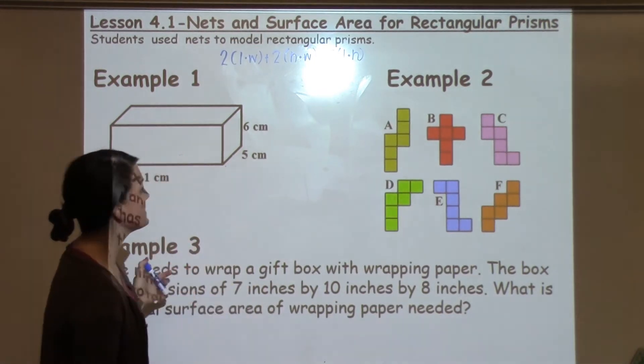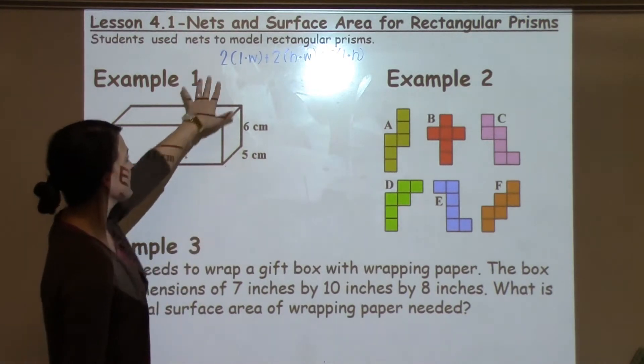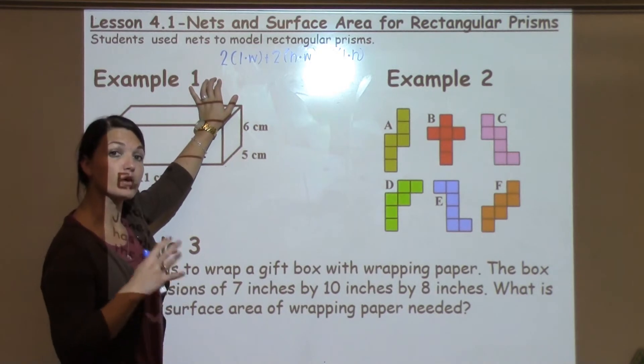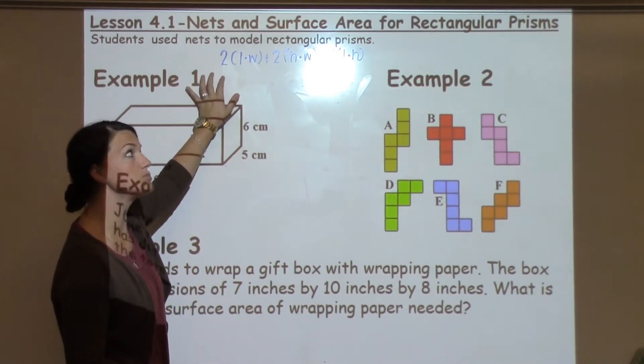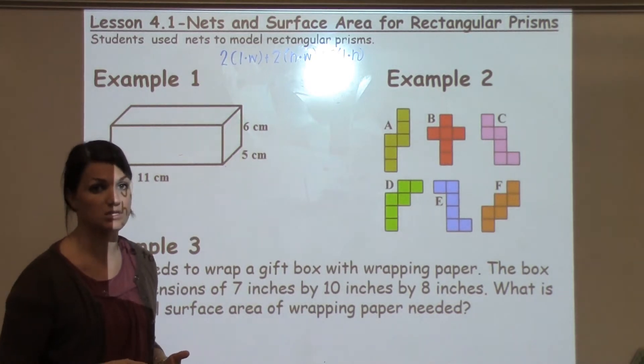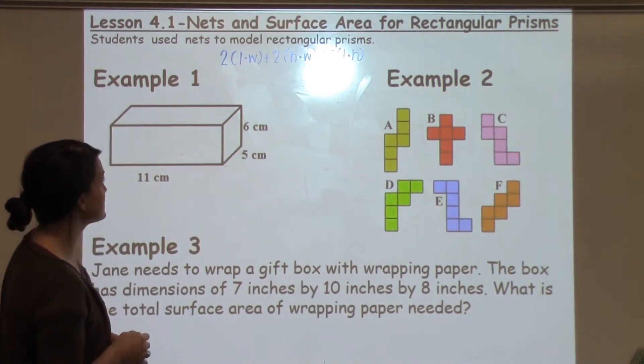So we're going to look at a couple different examples today and I've already written up a handy-dandy formula that can help you solve to find the surface area for cubes and rectangular prisms only, but it is one that the students might be familiar with and want to use depending on what their teacher was using in class.